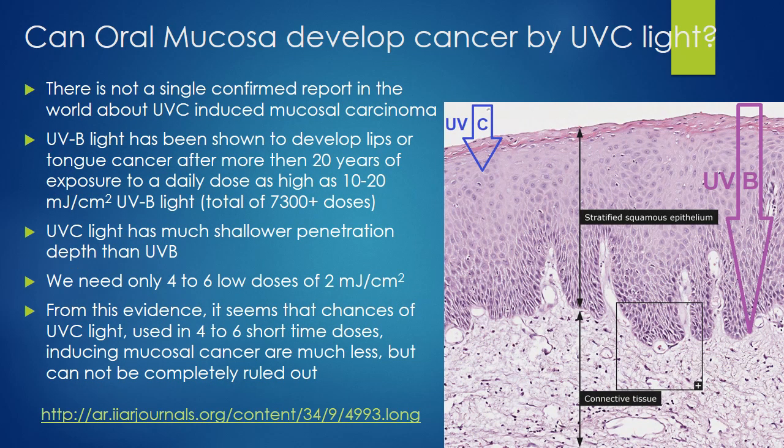Can oral mucosa develop cancer from UVC light? There is not a single confirmed report in the world about UVC-induced mucosal carcinoma. UVB light has been shown to develop lip or tongue cancer after more than 20 years of exposure to a daily dose as high as 10 to 20 millijoules per centimeter square — a total of 7,300 doses. UVC light has much shallower penetration depth than UVB; we need only 4 to 6 low doses of 2 millijoules per centimeter square. From this evidence, chances of UVC light inducing mucosal cancer in 4 to 6 short doses are almost nil, but cannot be completely ruled out.